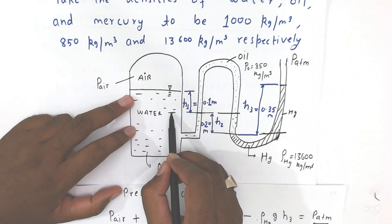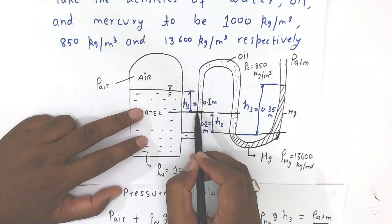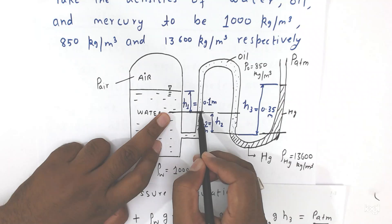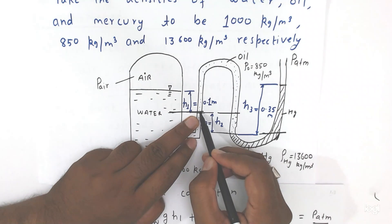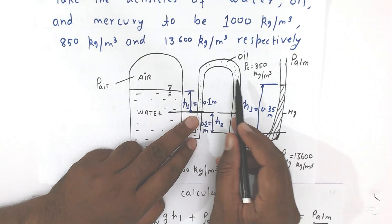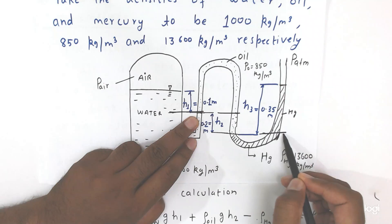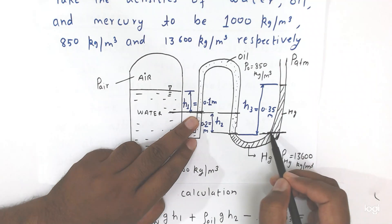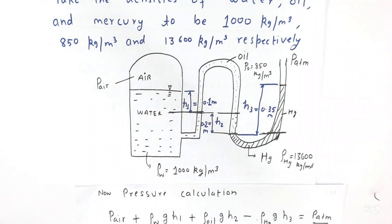Let me explain once more. At this point, whatever pressure is there — below this the pressure equalization holds. Pressure is equal at this point to this point, so we consider only this one height. From here this is the datum line, and in this case the pressure is equal so we consider only this height.